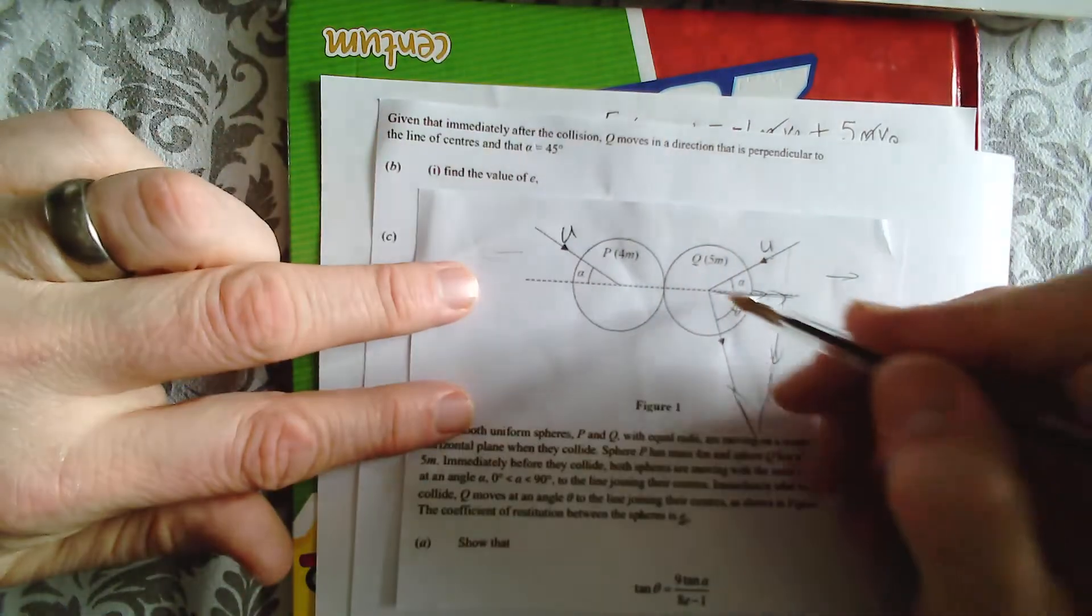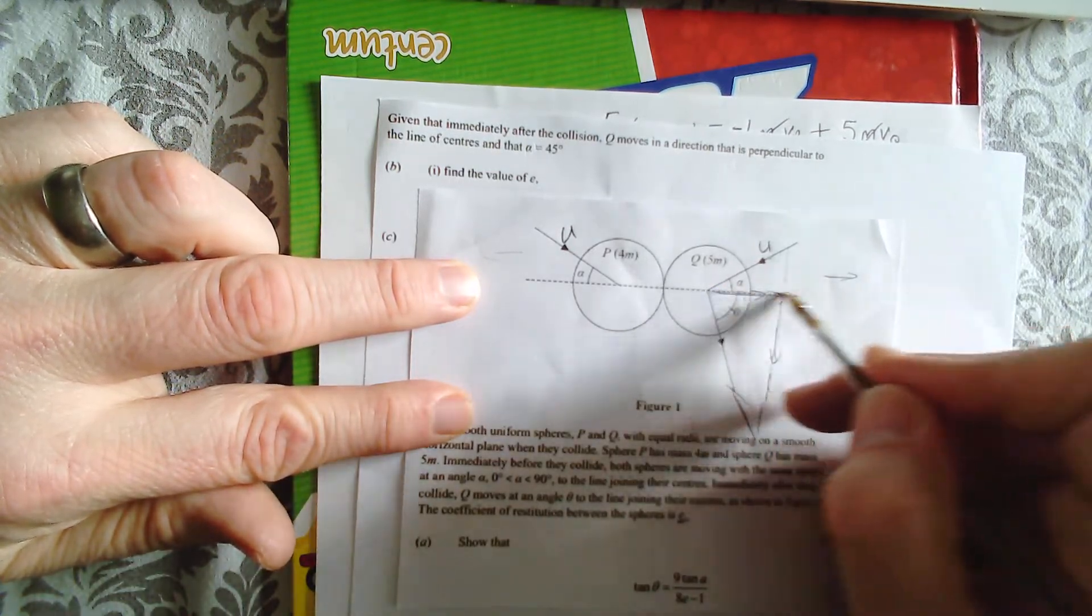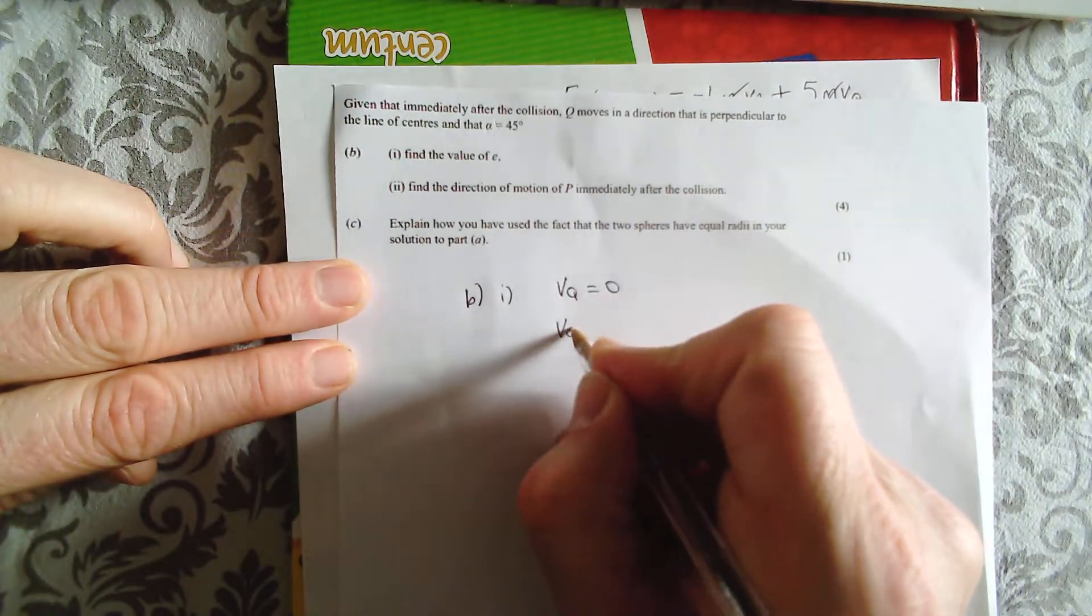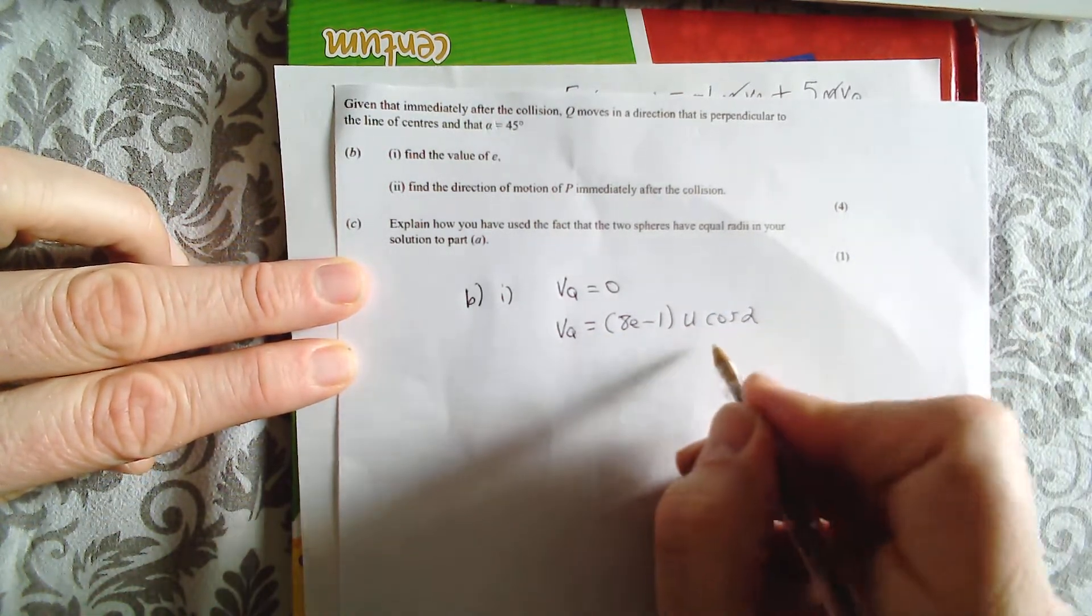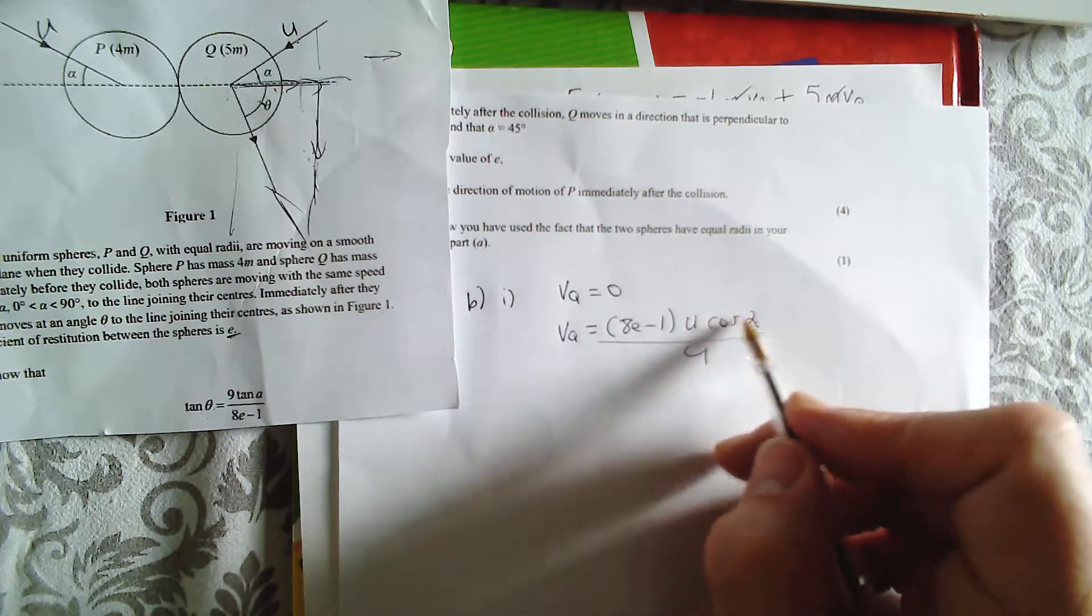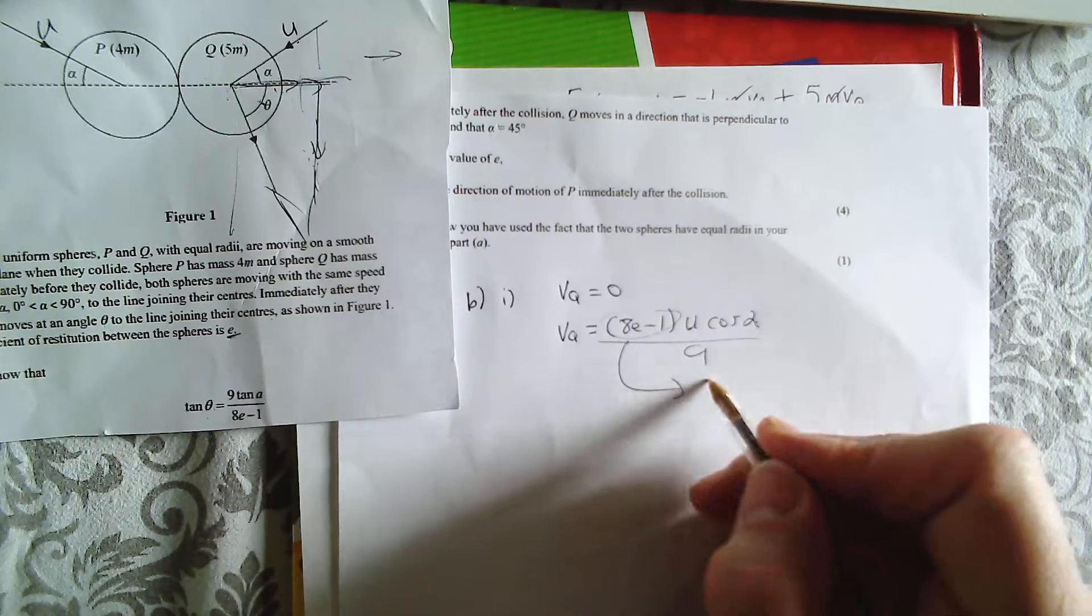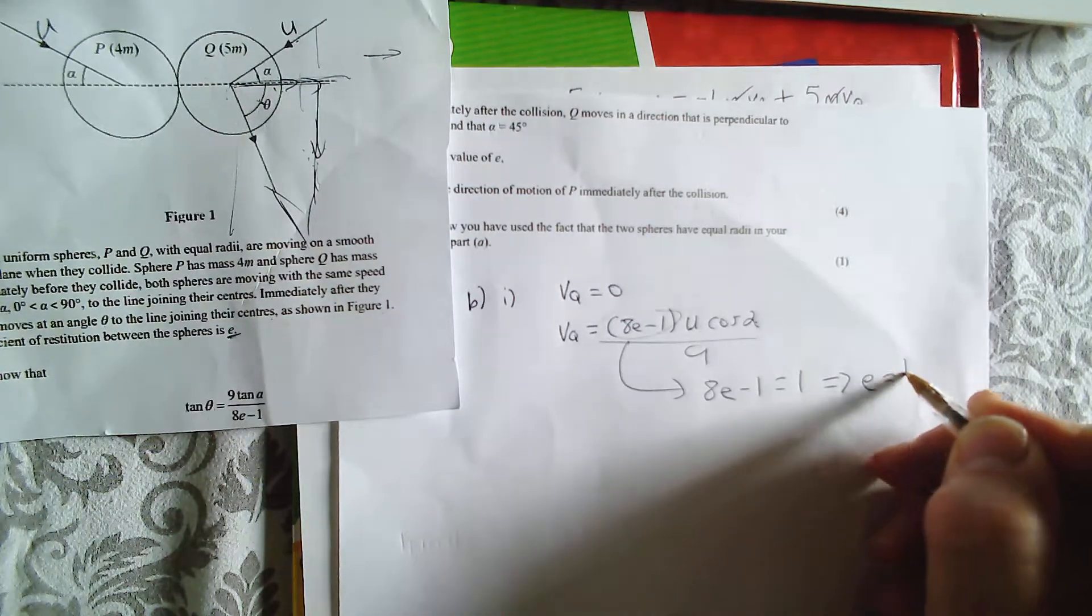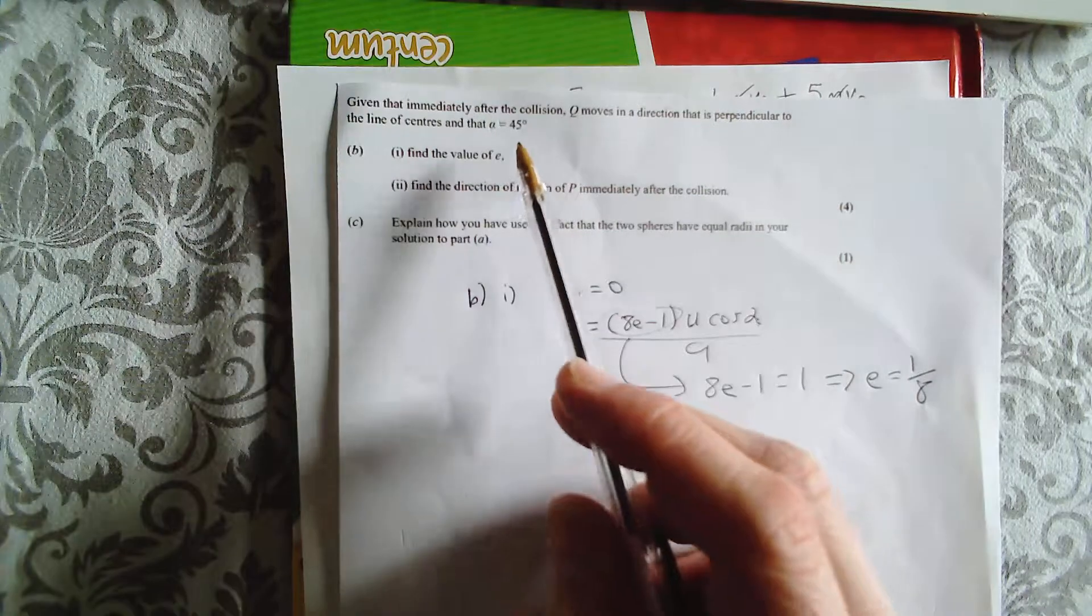Because let's look back at my diagram. It's moving like that. It's going to go like that. So, there's no component here. No component this way. Right, VQ is 0. Well, what does that mean? That means that, well, we look back and we say VQ from the last part is 8E minus 1, U cos alpha over 9. Well, cos alpha, well, alpha is 45 degrees. So, that's not 0 there. U's got a value. So, we've got to make that 0. In order for VQ to be 0, 8E minus 1 has to be 0. So, 8E minus 1 is 0. Well, that implies that E is 1 over 8. There you go.